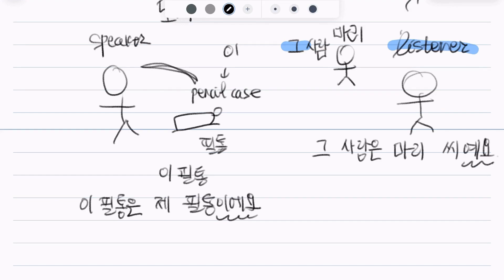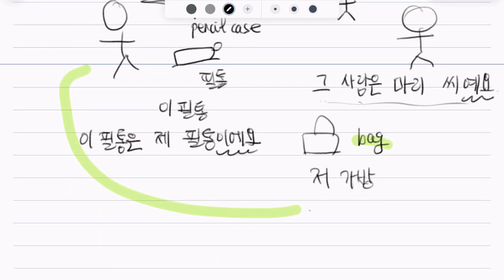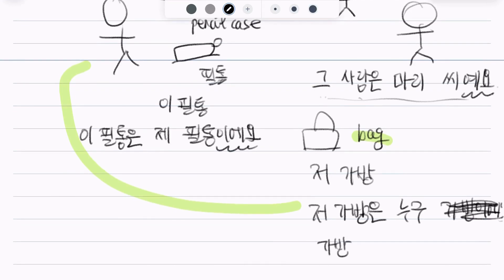Finally, back again. What are we going to use here with back? It would be, 저 가방. Why? It's far from the speaker. So, we just use 저. So, if I make a sentence, 저 가방은 누구 가방이에요? 누구 가방이에요?